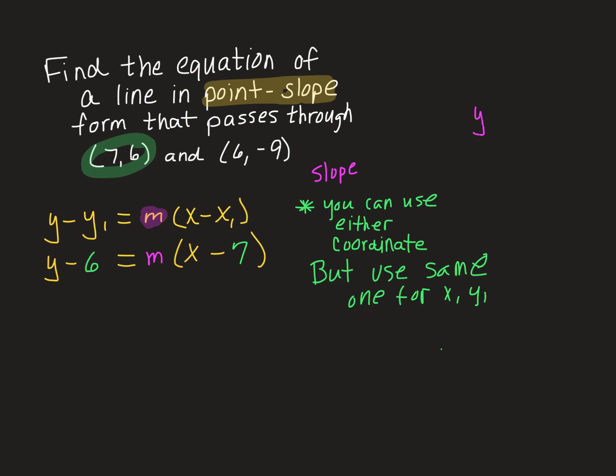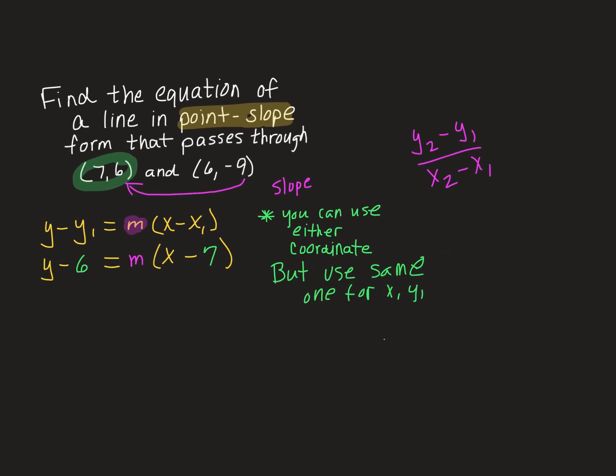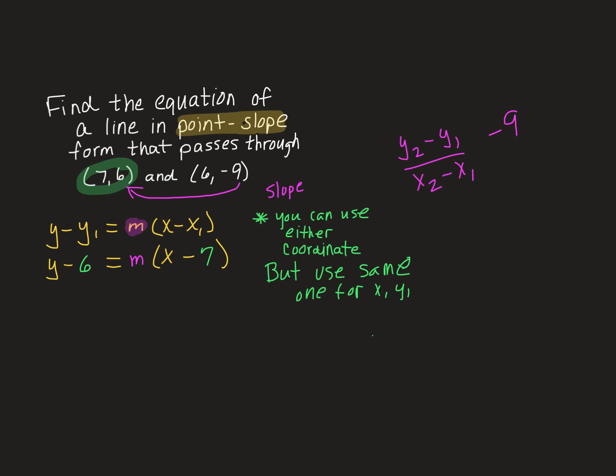Remember how we find the slope. We do y₂ minus y₁ over x₂ minus x₁. So that means that I'm going to take my second y coordinate, which in this case is negative 9, and I'm going to subtract my first y coordinate, so that gave me 6. And then to do the x₂ minus x₁, I'm going to do my second x coordinate and subtract my first x coordinate. So the slope is going to be negative 15 over negative 1, which simplifies to a positive 15.